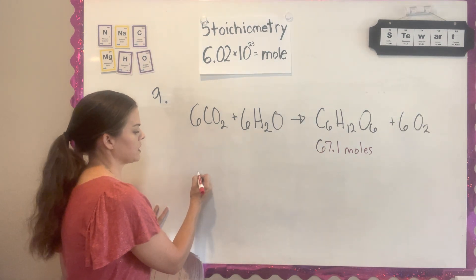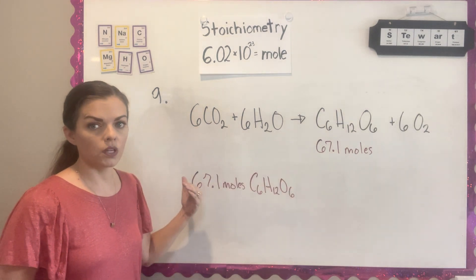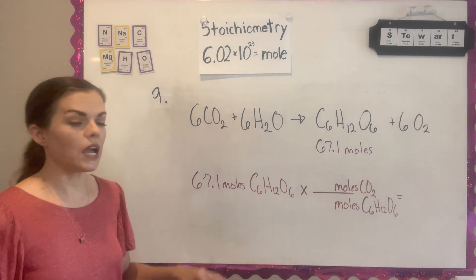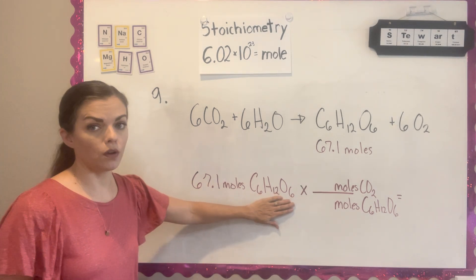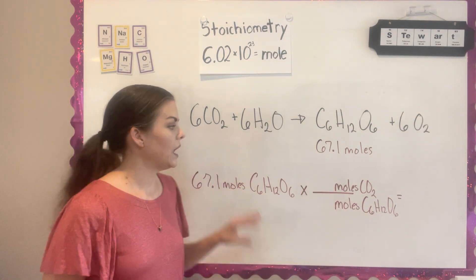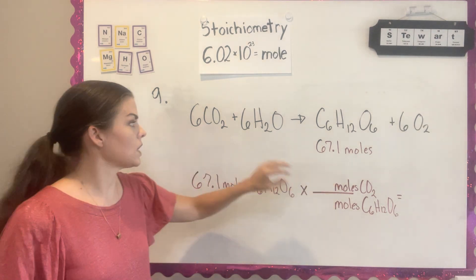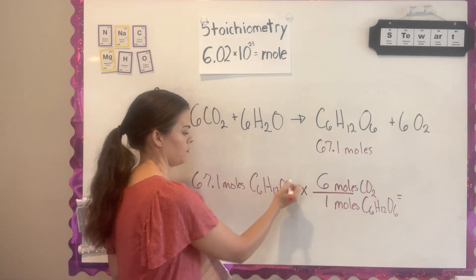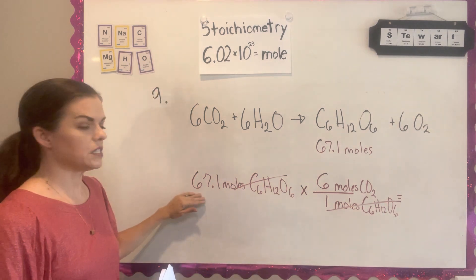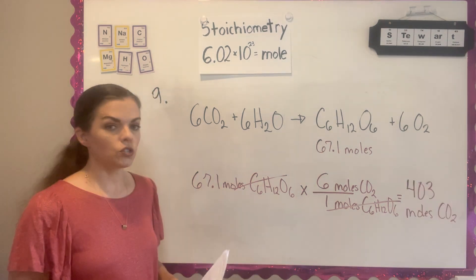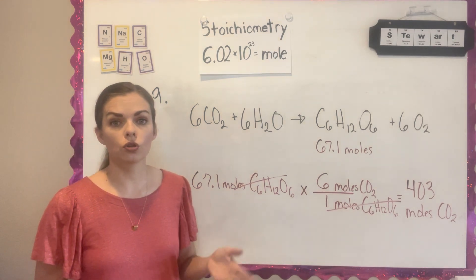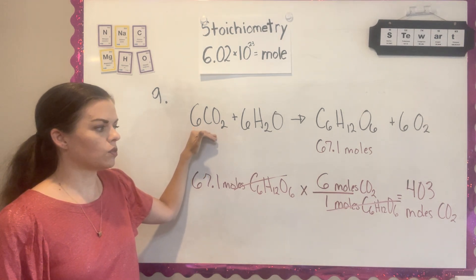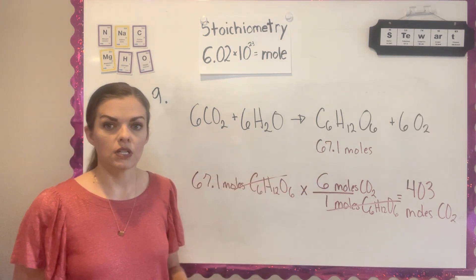Starting with 67.1 moles of glucose and going from moles of one part of the equation to the other, we use a ratio from the coefficients. Since I'm canceling out C6H12O6, I put it on the bottom and CO2 on top. The coefficient for CO2 is 6, and it reacts in a 6-to-1 ratio, so you calculate 67.1 × 6, reporting with three significant figures to get 403 moles of CO2. This plant needs to absorb 403 moles of CO2 to produce the glucose it needs.